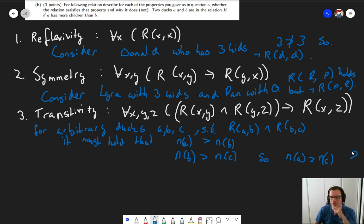And so, this one also holds. So, this relation is not reflexive. We came up with a counter example. It's not symmetric. We came up with a counter example. But it is transitive. And we give an explanation as to why it holds. Namely, because of the transitivity of the greater than relation.